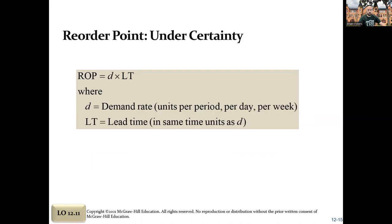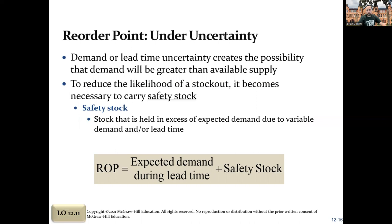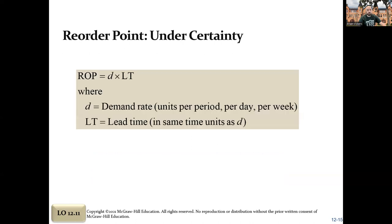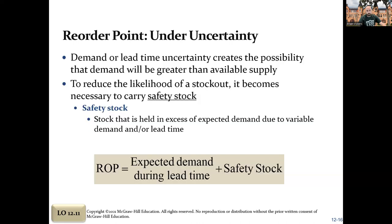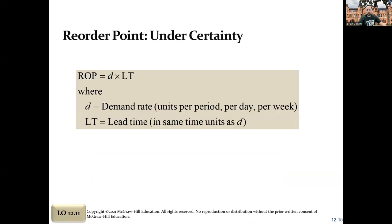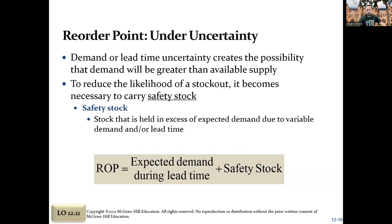If there's uncertainty — say demand or lead time varies, or your supplier doesn't ship on weekends but you're open seven days a week — you may want to keep excess stock on hand. In that case, add safety stock to your reorder point formula: reorder point equals demand times lead time plus safety stock. Using the same example of 25 per day and four-day lead time, with a safety stock of 20, your reorder point under uncertainty would be 120.